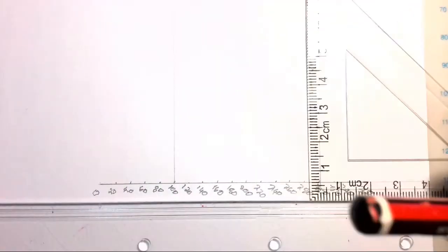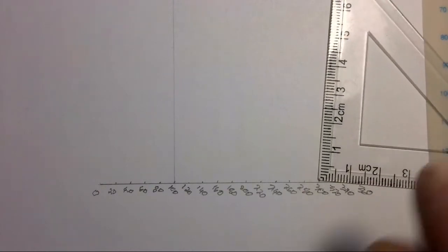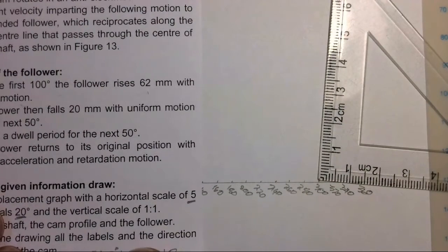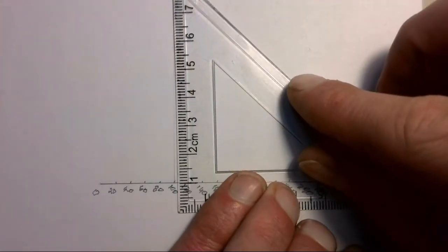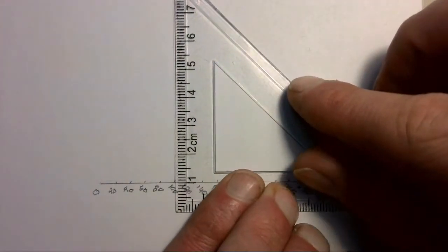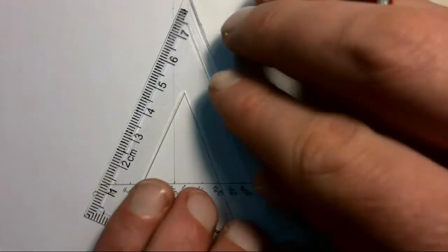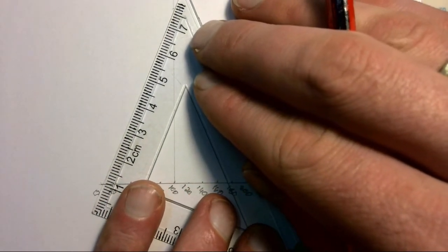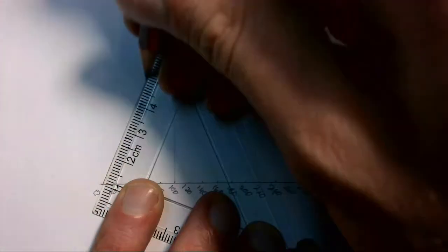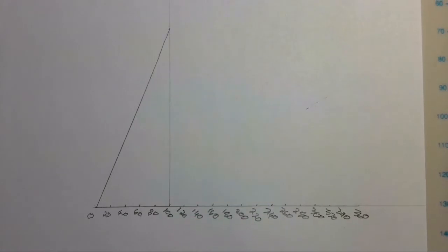We draw the construction line going up, mark off 62 millimeters on it, then draw our first straight line starting from zero up to the top of that marked line. That's the start of our movement.